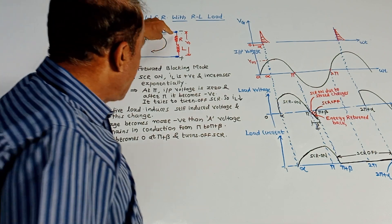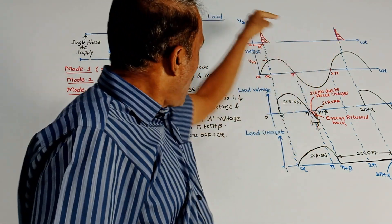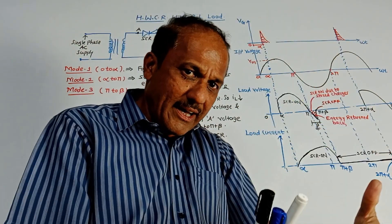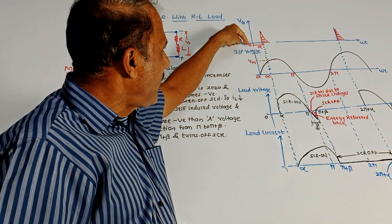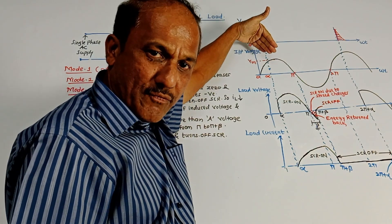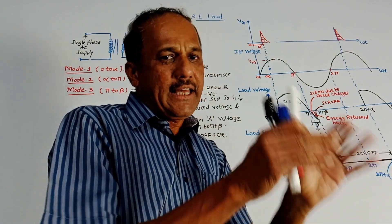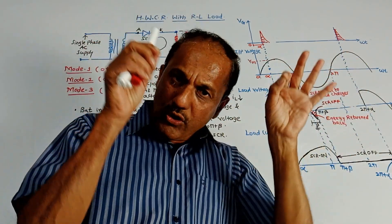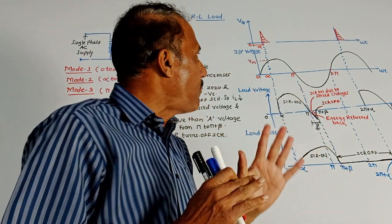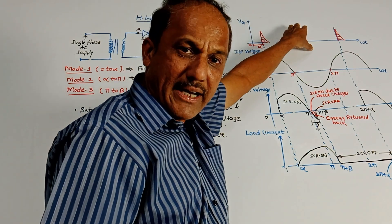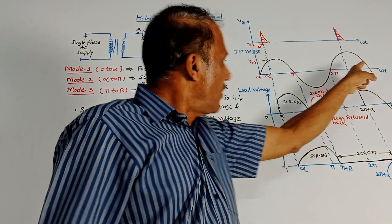We are connecting RL load — that is resistor and inductor — across which we want to measure the output voltage. The first waveform is the waveform of gate pulses. We are going to apply the gate pulses with firing angle alpha. So after every value of alpha, we are going to apply gate pulses to the SCR. Once SCR is forward biased and we apply the gate pulse, SCR will be turned on. When SCR is turned on it acts as a closed switch; when turned off it acts as an open switch.